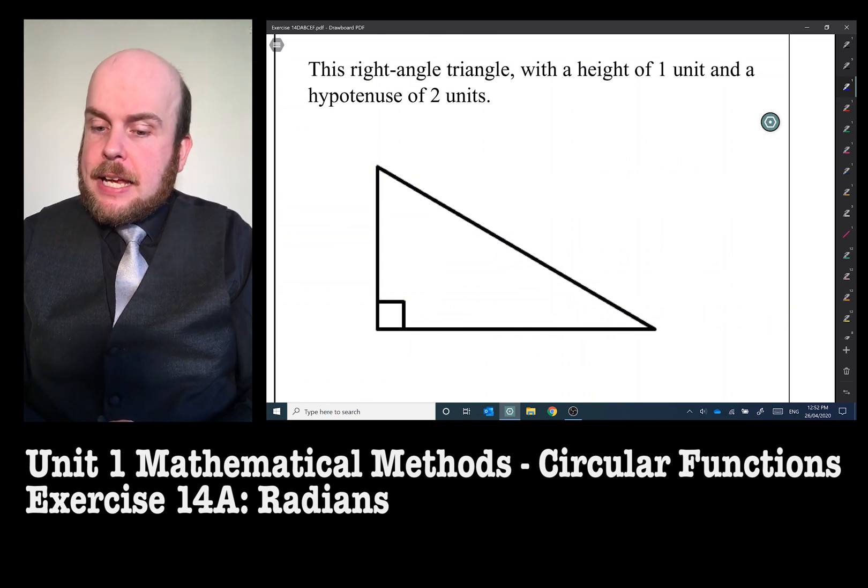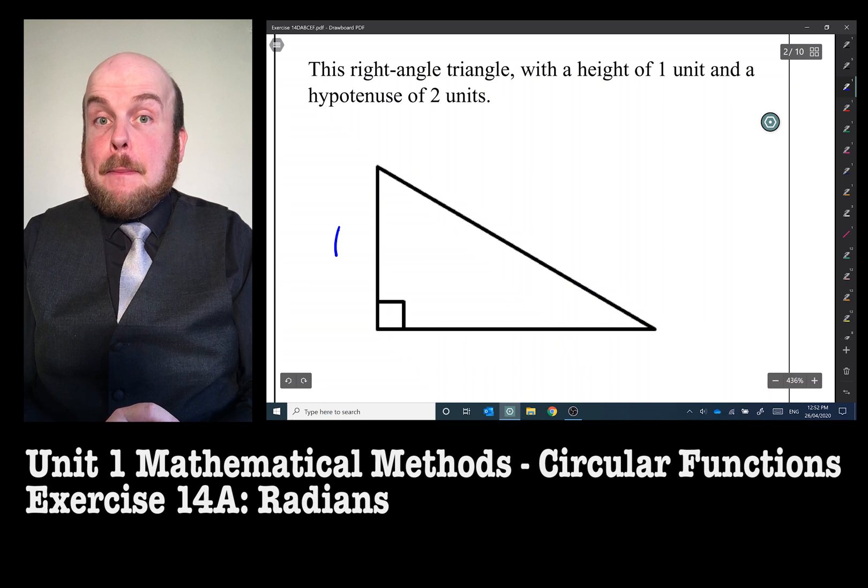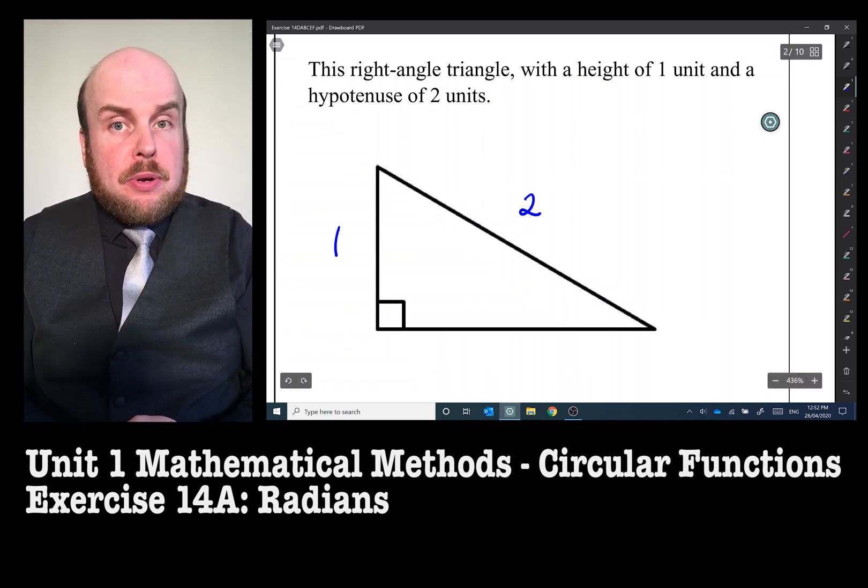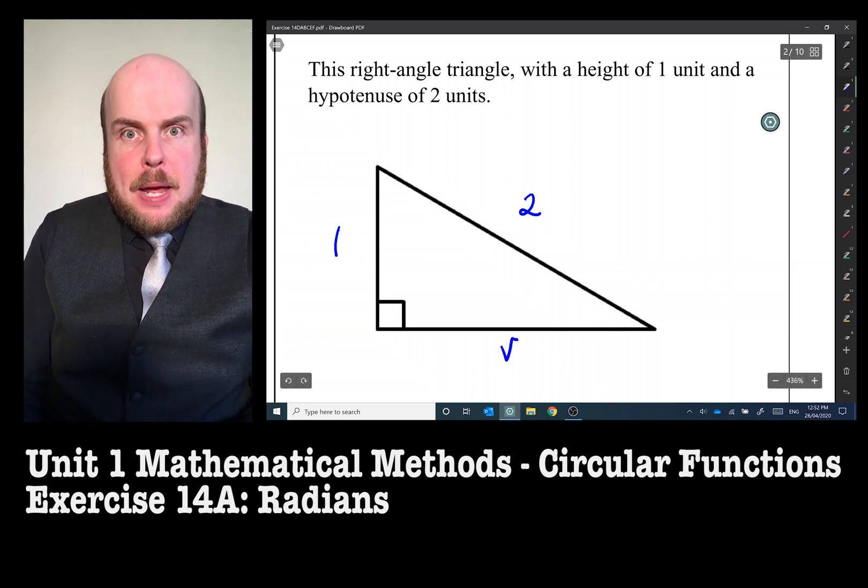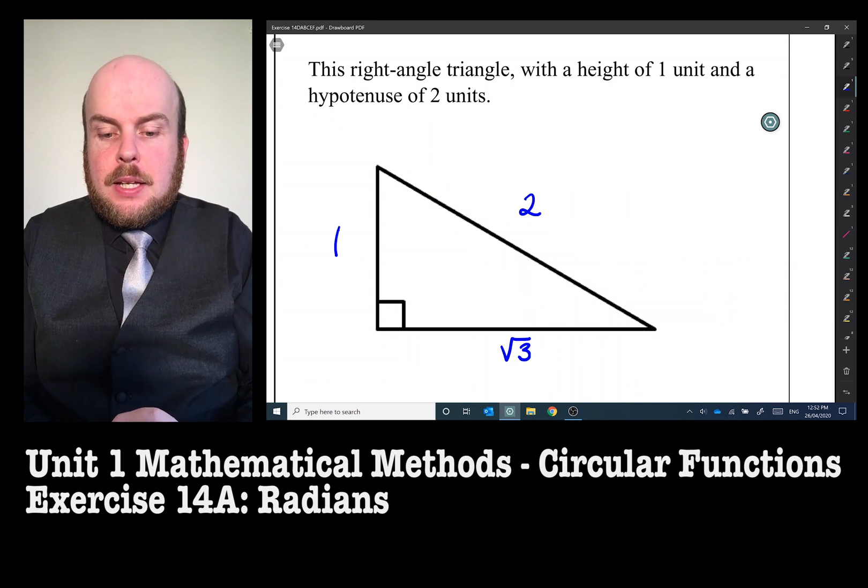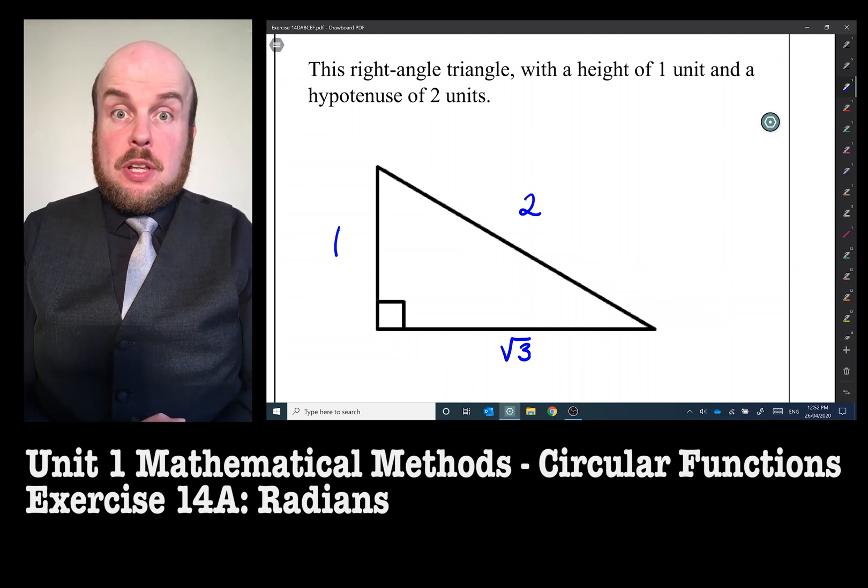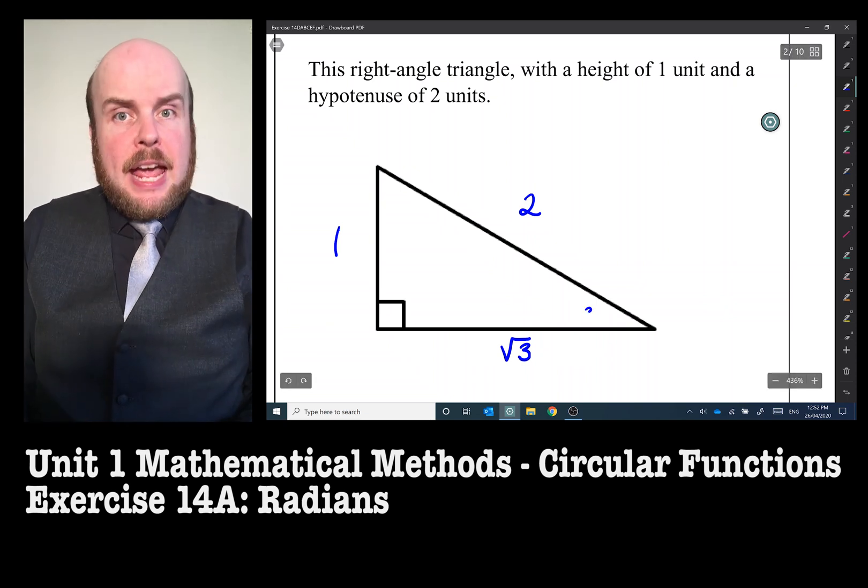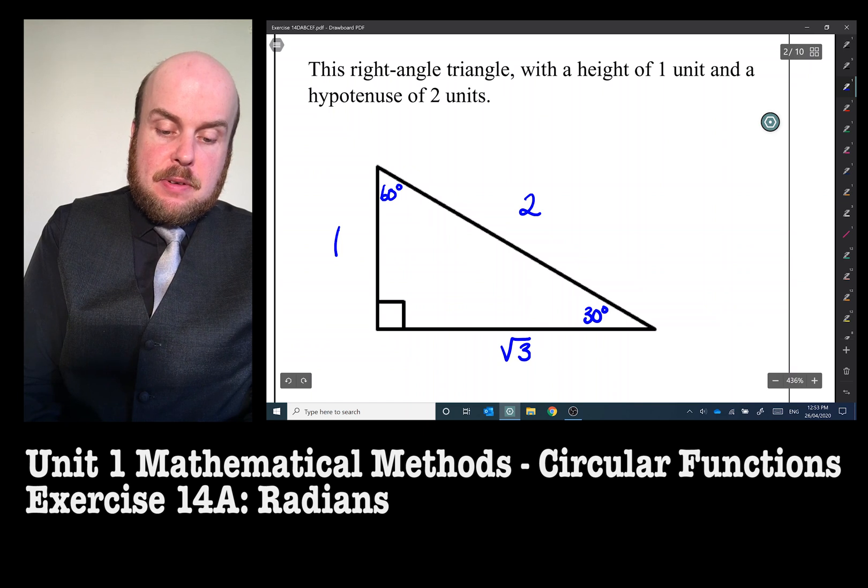Now with this right angle triangle that has a height of one and a hypotenuse of two, we calculated using Pythagoras in the previous video that this is going to have a base of root three. We also discovered when we used our knowledge of trigonometry what the angles on the inside were. This one here was 30 degrees and this one here was 60 degrees.